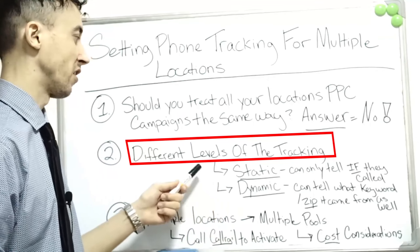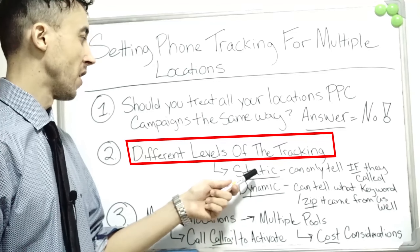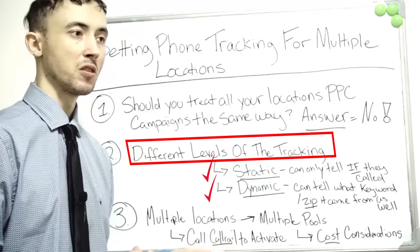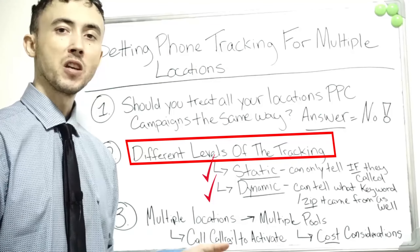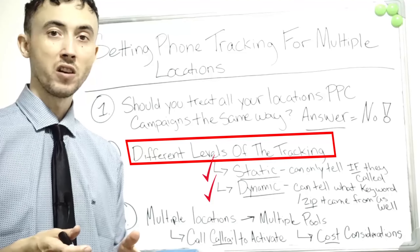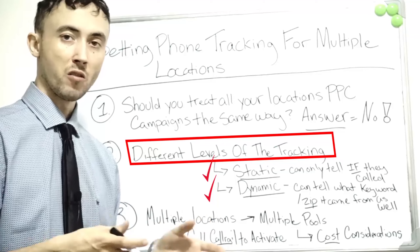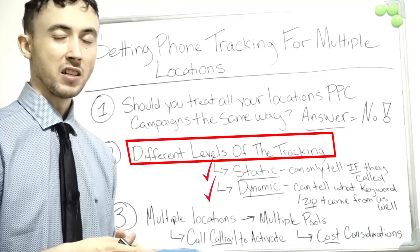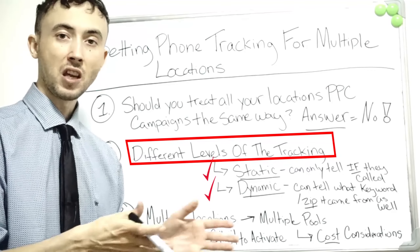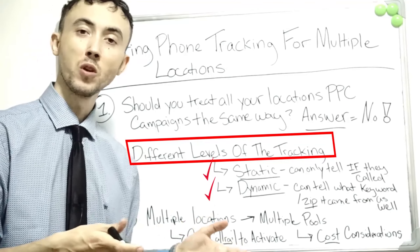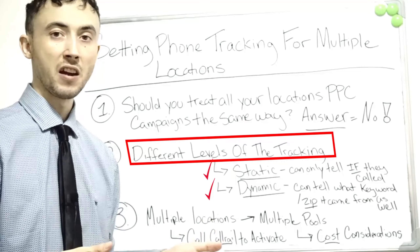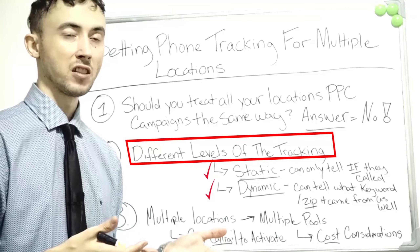There are two main categories of call tracking: static and dynamic. Static is basically where the call tracking provider gives you a flat-out phone number you put on your site, and every time someone calls, it shows up in your CallRail or Mongoose Metrics dashboard. Technically it can feed data back into your Google Analytics account, but it's non-specific as to where that call came from — what was the source of the traffic — because the phone number does not rotate.